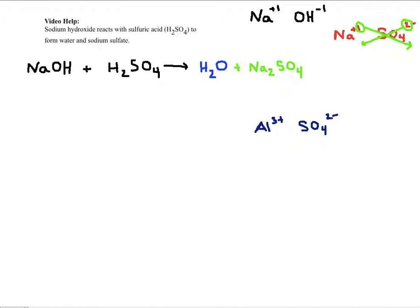If I were to cross those charges, so the three would become the subscript for the SO4, the two for the Al, I would need to write it as follows. It would have to be Al2, and then the SO4 would now need to be in parentheses because I need three of the SO4s. So I need to put that in parentheses, and then I put it three.